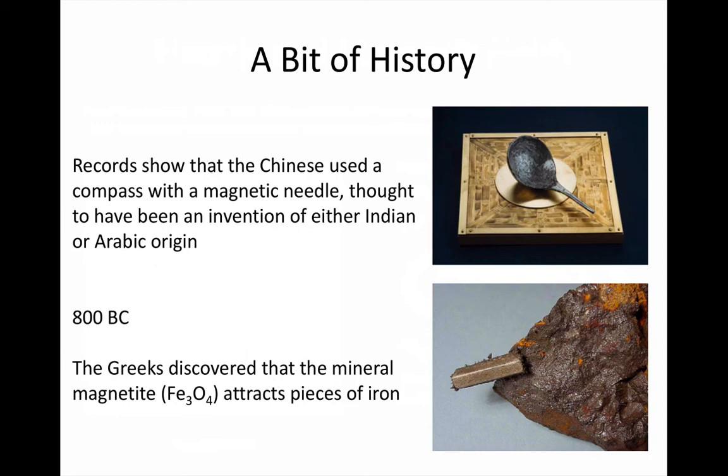The Greeks discovered that lodestones, naturally magnetized pieces of the mineral magnetite, would attract iron. They named these lodestones Magnitus Lithos because they came from the region Magnesia.